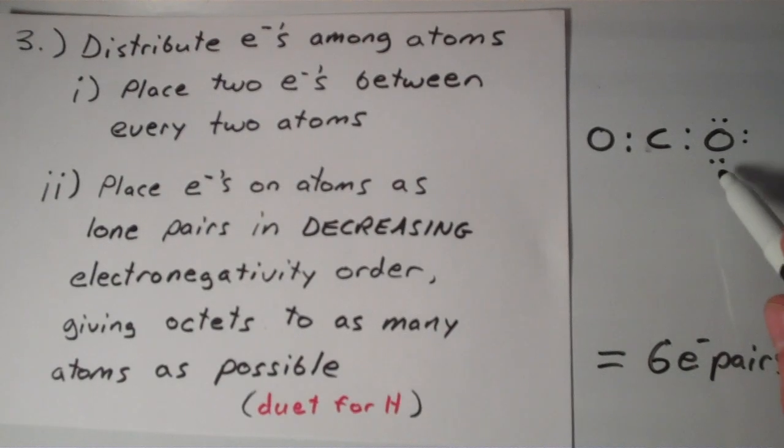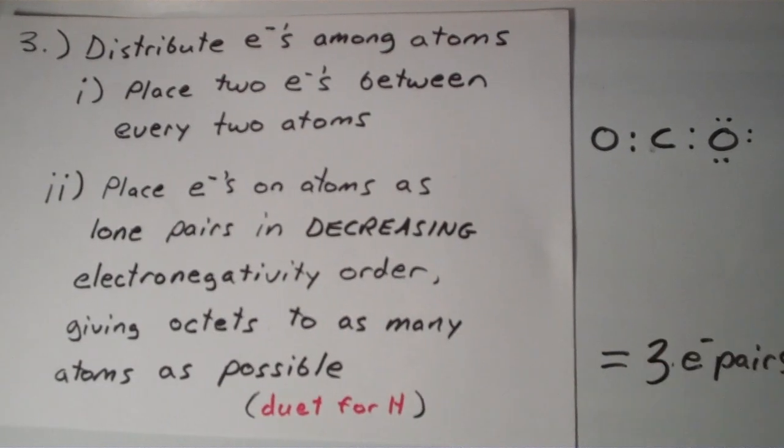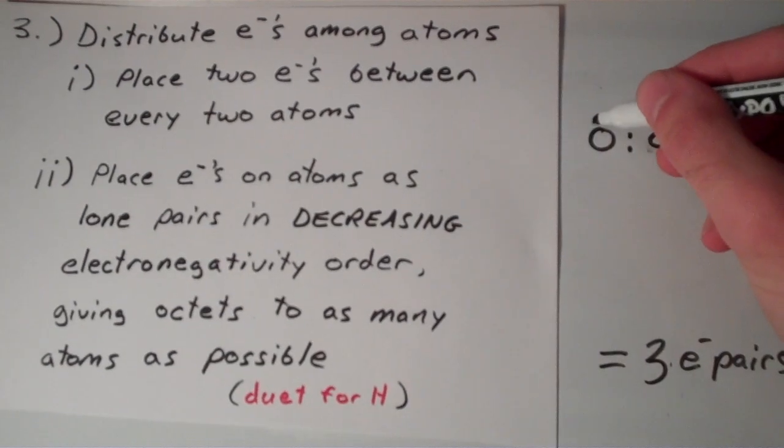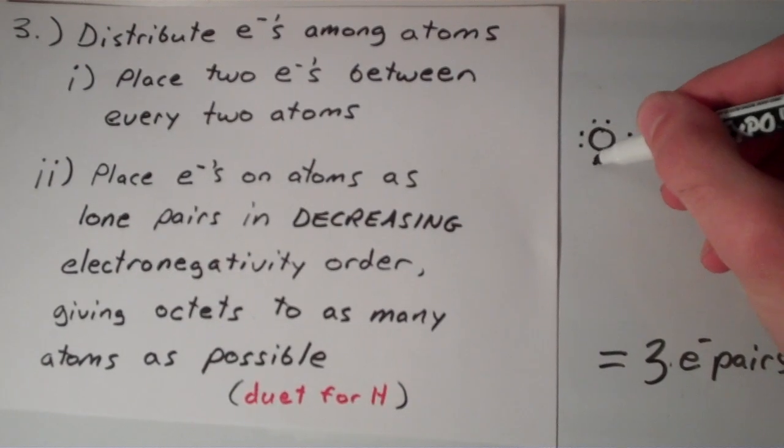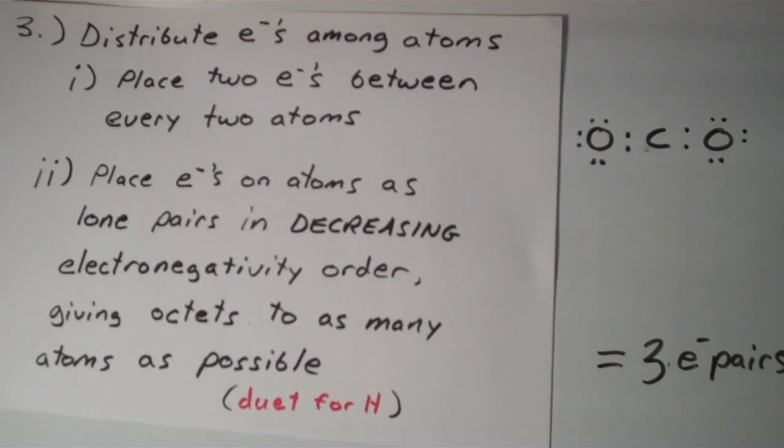So, we just used up 3 more electron pairs, so 6 minus 3. Now we have 3 more electron pairs. And I'm going to add them to the other oxygen. So now we've used up all of the electrons in this molecule.